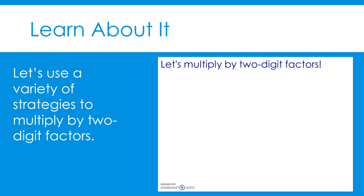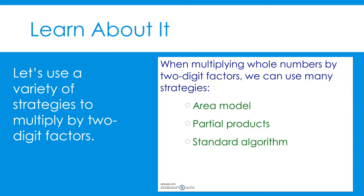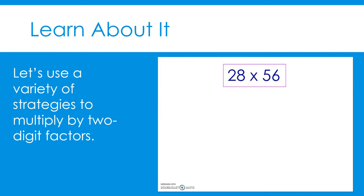Let's multiply by two-digit factors. Earlier this week, you reviewed strategies for multiplying whole numbers by one-digit factors. In this video, we will review three strategies for multiplying whole numbers by two-digit factors: using an area model, partial products, and the standard algorithm. Let's use each of those strategies to determine the product of 28 times 56.